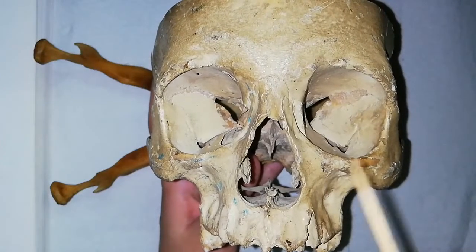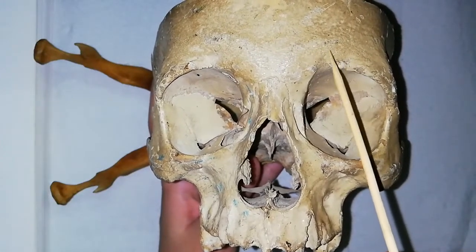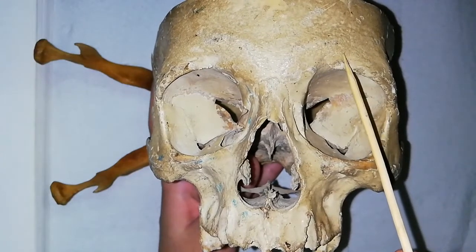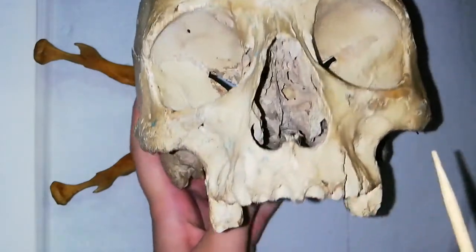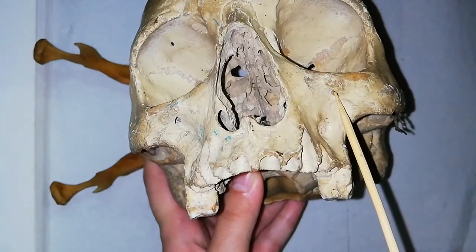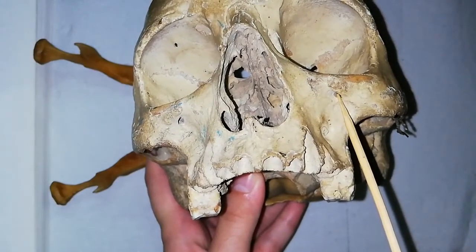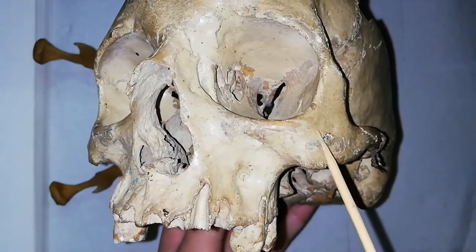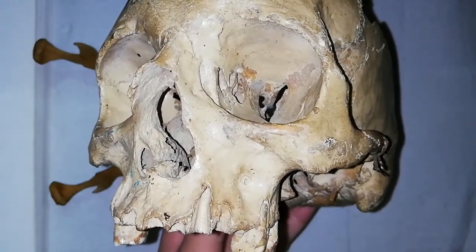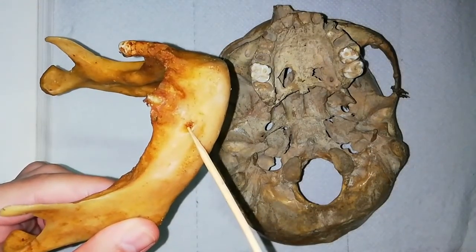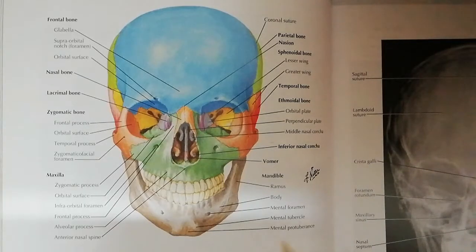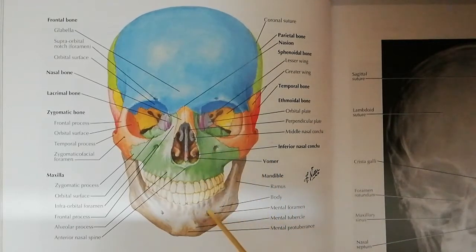Now let's come to the supraorbital foramen. This is superior to the orbital cavity and is also called the supraorbital notch; it transmits the supraorbital nerve and vessels. The infraorbital foramen transmits the infraorbital nerve and vessels. In this area we have the zygomaticofacial foramen and it transmits the zygomaticofacial nerve. The mental foramen on the mandible transmits the mental nerve and vessels.